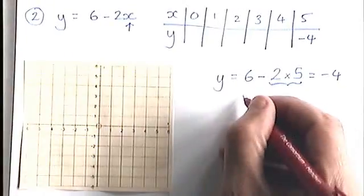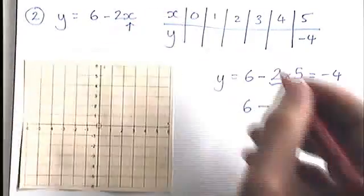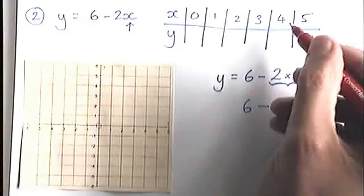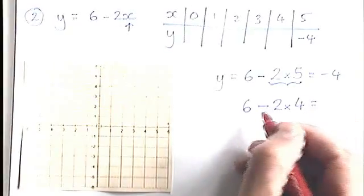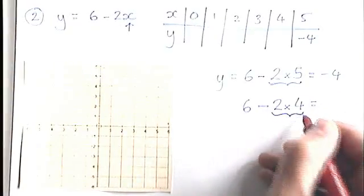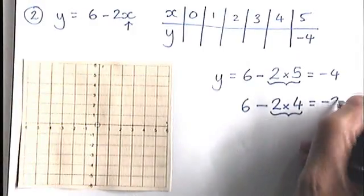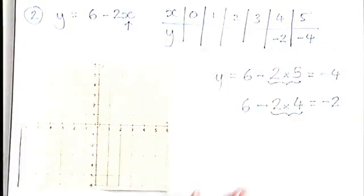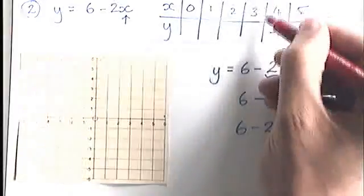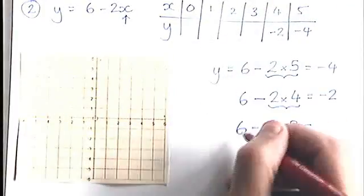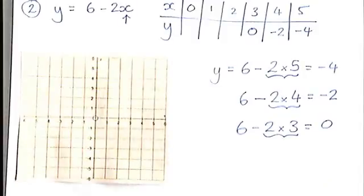The next one I'm going to do, remember the rule says 6, always 6, take away 2 lots of the x number. The x number, the next one I'm going to do is 4. So I'm doing 6 take away 2 lots of 4. Again, remember your order of operations. That should happen first, that's 6 take away 8, so it's minus 2. The next one will be 6 take away 2 lots of, the x number I'm going to use is 3. So that's 6 take away 6, which is 0.